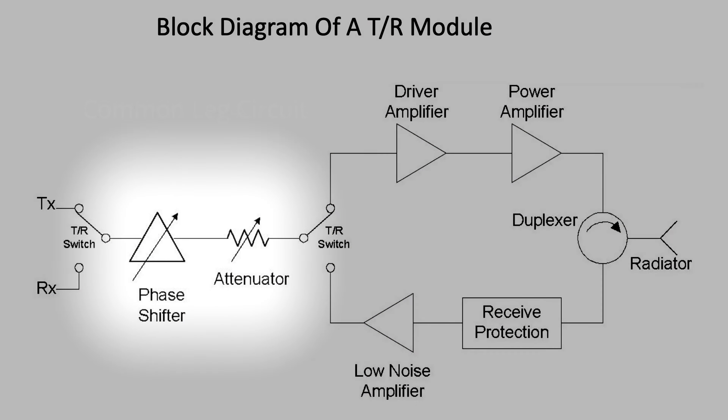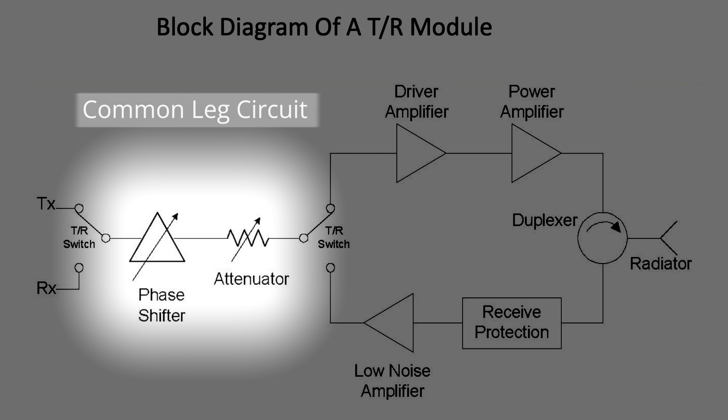After the LNA and before the driver amplifier, there is a part of the circuit called a common leg circuit. That's where the phase shift functions occur that steer the antenna beam, and that's also where the amplitude variation functions are contained that vary the level of the signal that's transmitted and received. Those are the main electrical functions inside the TR module.